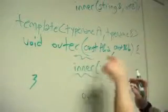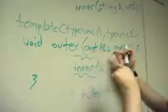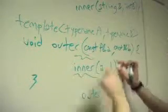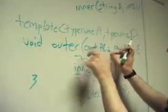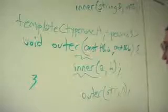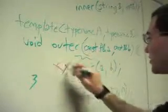So outer will compile and it'll say, I'm going to take const string reference and const int reference. Then I try to call inner and try to pass these const references to inner, which wants to modify them. Const correctness violation. No, no, no, this will not compile.